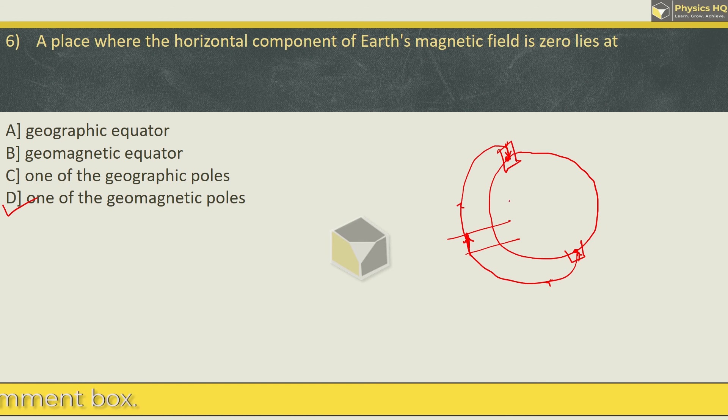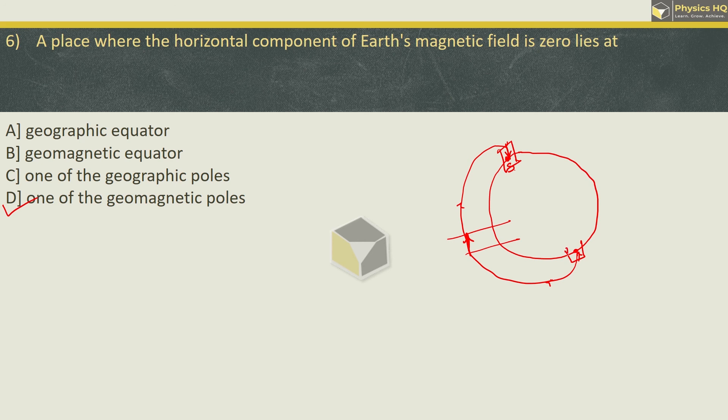Or you can say vertical. So at these points, which are geomagnetic poles, magnetic south pole and magnetic north pole, the magnetic field is completely vertical. There is no horizontal component. This is why the horizontal component is 0 there. I hope you all understood this.